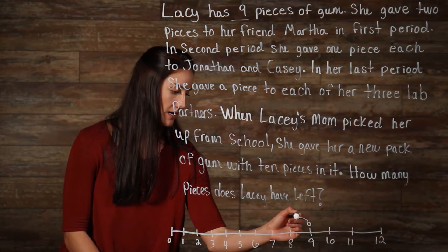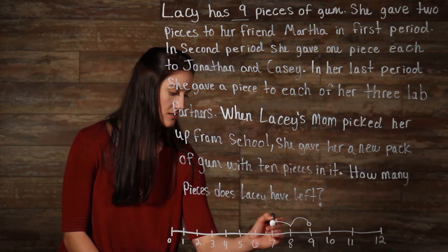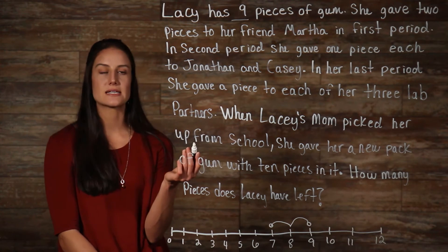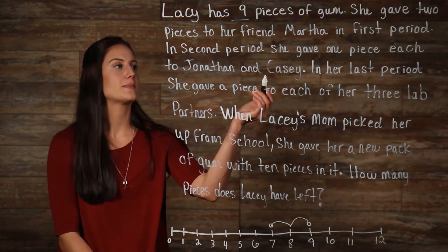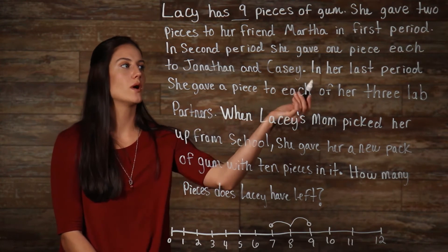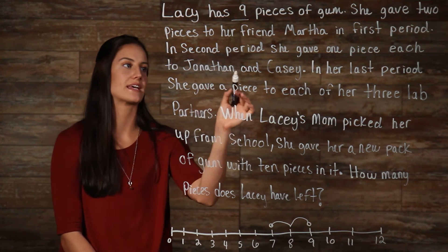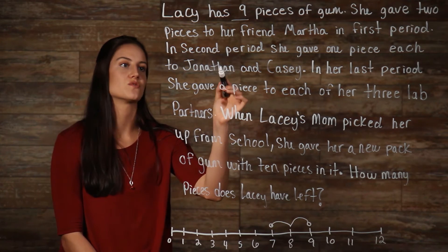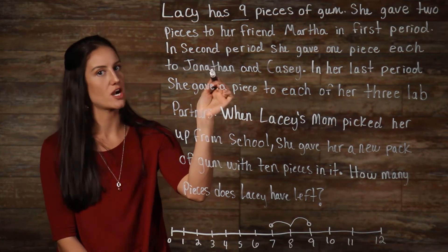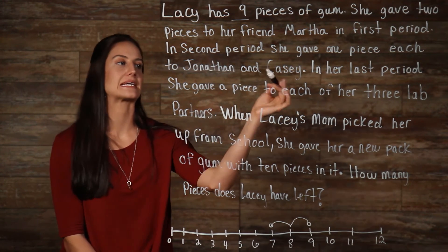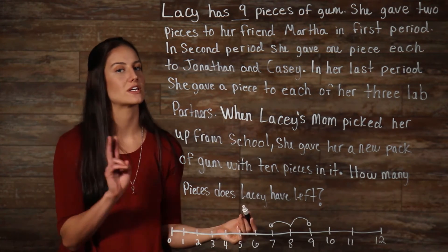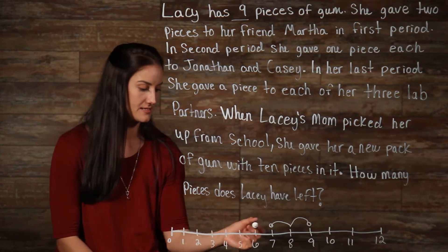So we need to go back this way two spots, so now she has seven. In second period, she gave one piece each to Jonathan and Casey. So if she gave one piece to Jonathan and one piece to Casey, she gave away two more pieces. So we have to go to the left two more times.